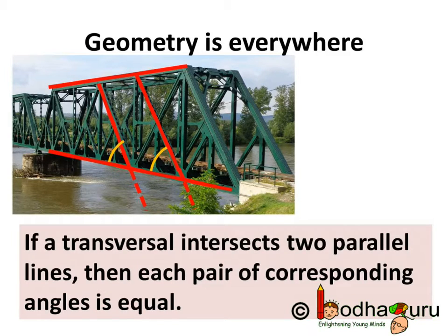Now we also know the corresponding angles axiom, that is, if a transversal intersects two parallel lines, then each pair of corresponding angles is equal.